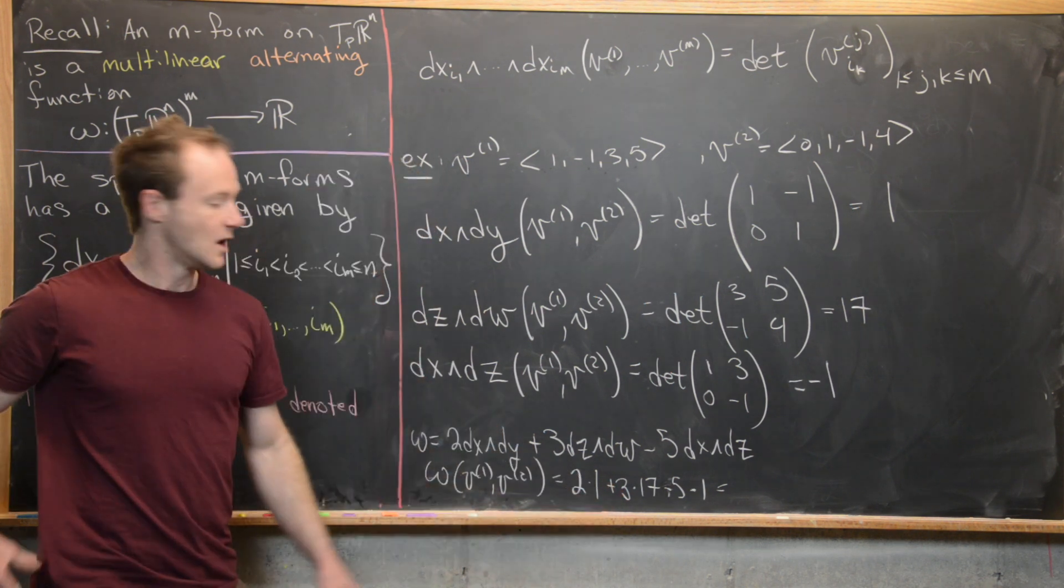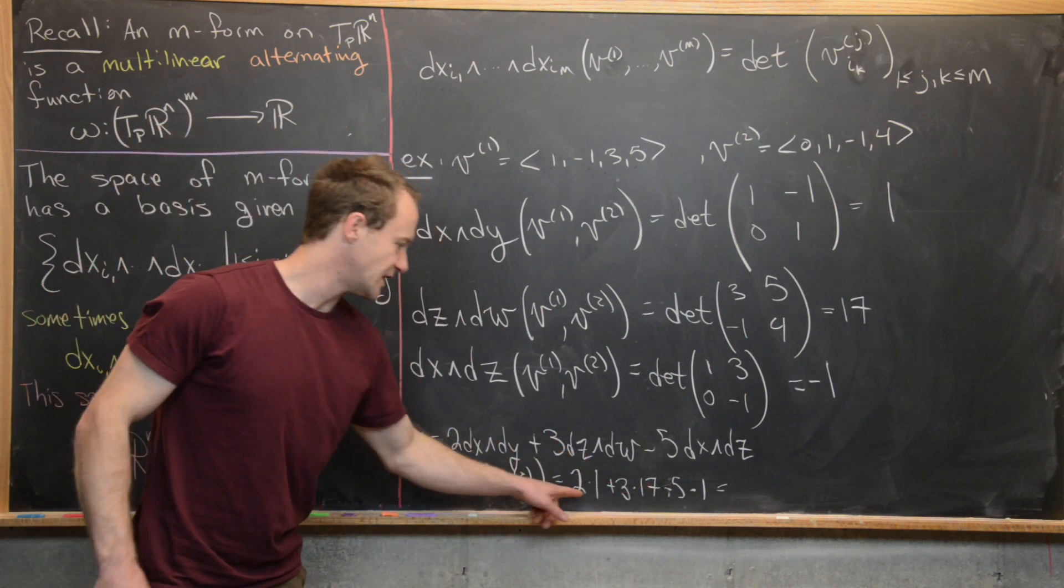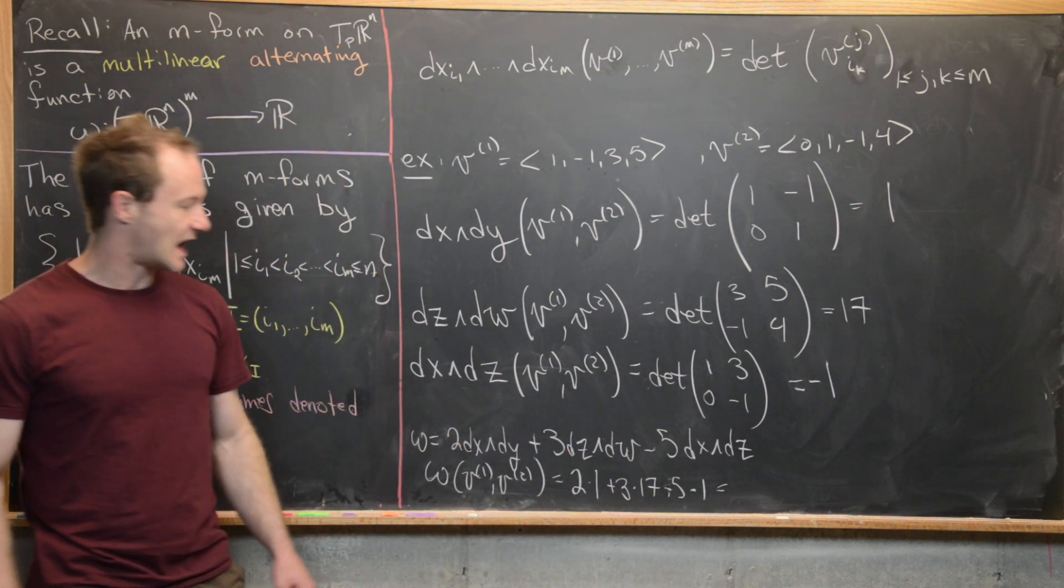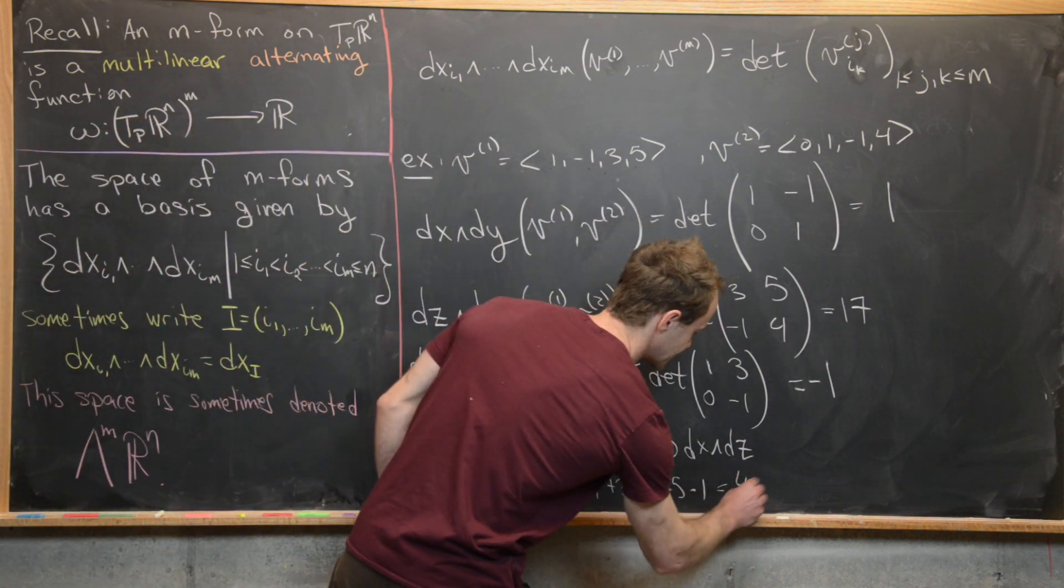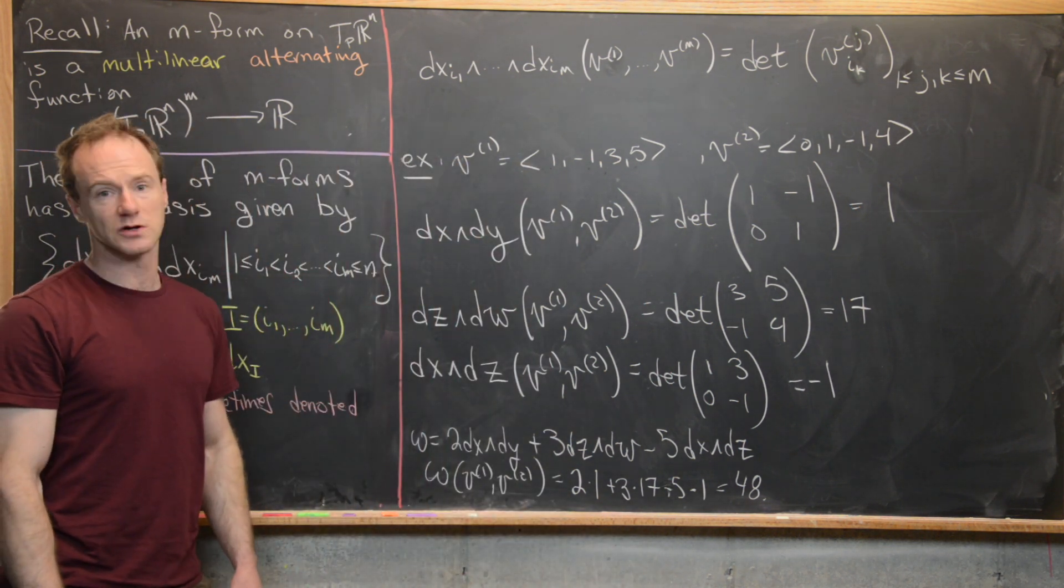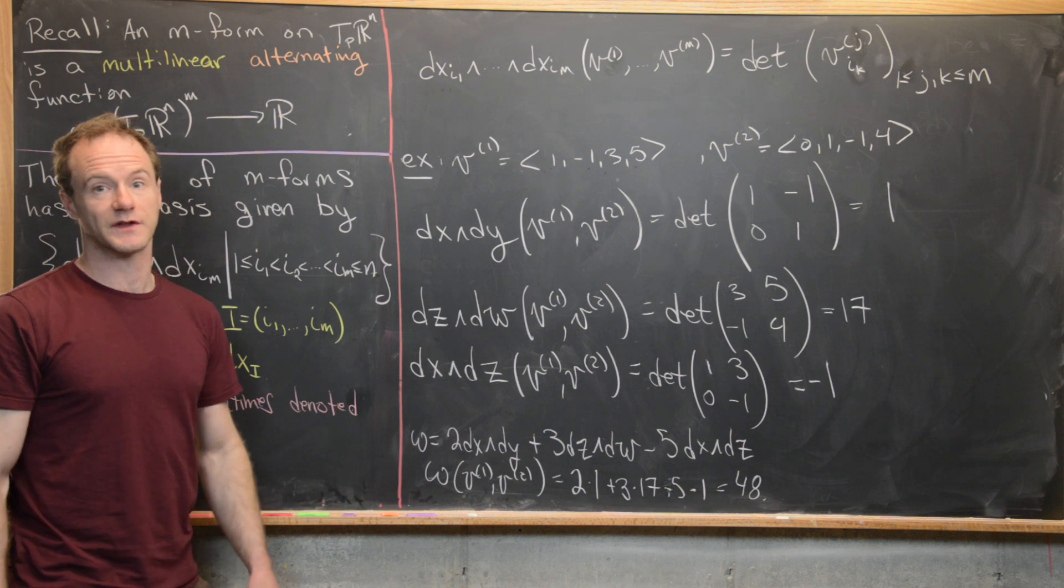So let's see what we get. Here we get 51 plus 2 is 53 minus 5 is 48. So the final answer here is 48. I'll clean up the board and then we'll look at some more general things.